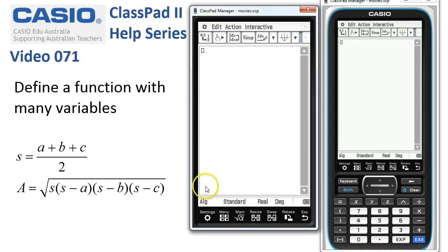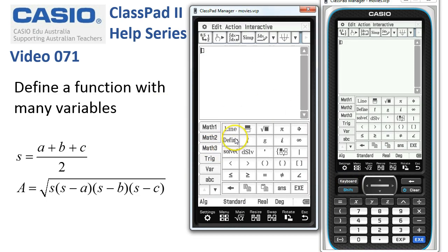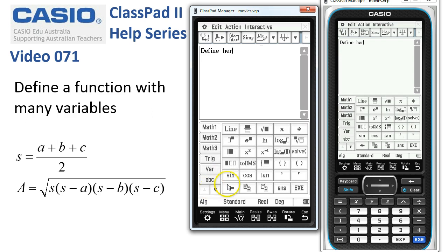So we'll tap into main and get the keyboard up, head down to the Math3 template and here's everything we need to define functions. So we'll start by defining—we need a name of our function so I'm going to use H-E-R short for Heron and go back to the main menu.